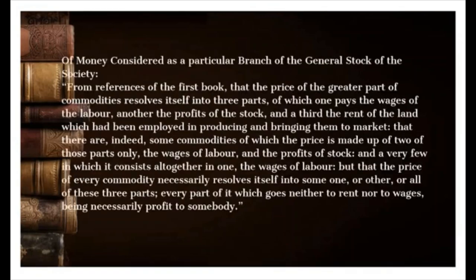Of money considered as a particular branch of the general stock of society: from the first book, the price of the greater part of commodities resolves itself into three parts — one pays the wages of labor, another the profits of stock, and a third the rent of the land which had been employed in producing and bringing them to market. There are indeed some commodities of which the price is made up of two of those parts only — the wages of labor and the profits of stock — and a very few in which it consists altogether in one, the wages of labor. But the price of every commodity necessarily resolves itself into some one, or other, or all of these three parts; every part which goes neither to rent nor to wages being necessarily profit to somebody.